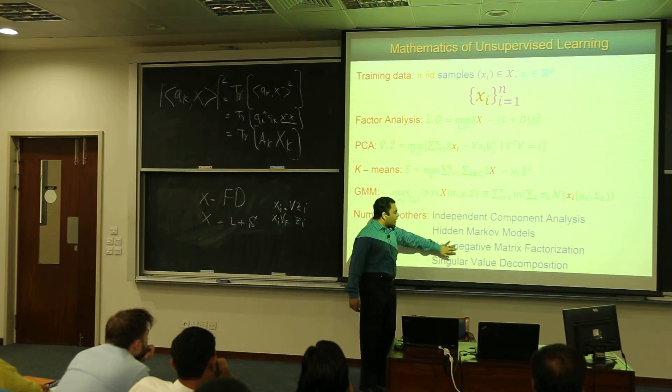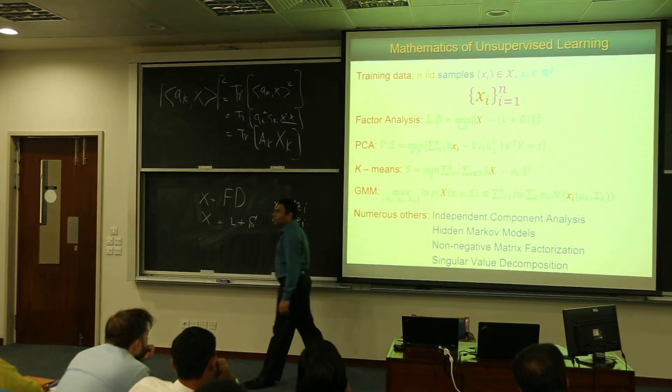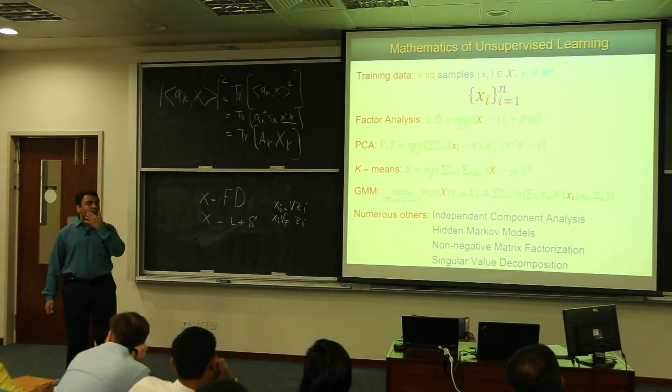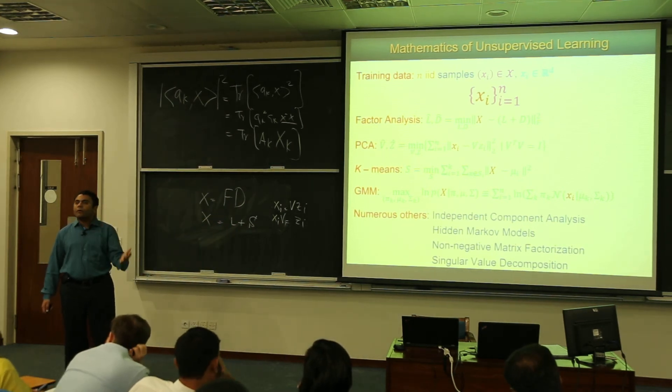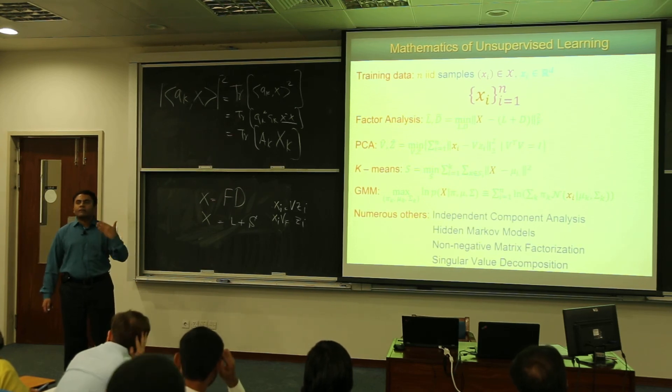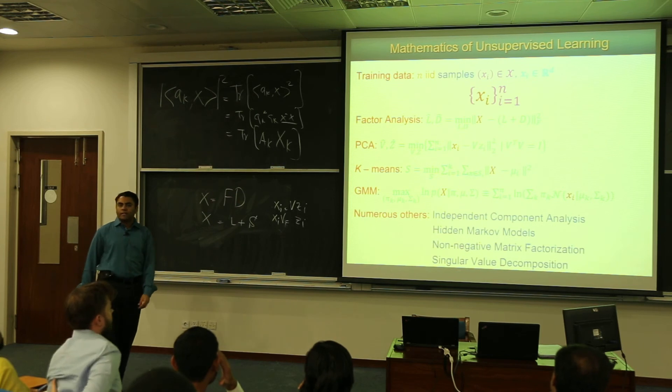And then you have numerous others: independent component analysis, non-negative matrix factorization, SVDs. There are all sorts of different methods, hidden Markov models. They are nothing but examples of unsupervised learning. I don't have annotations, but still, it's not a dead end. I can still unravel a lot of interesting structure that is hidden in the data.